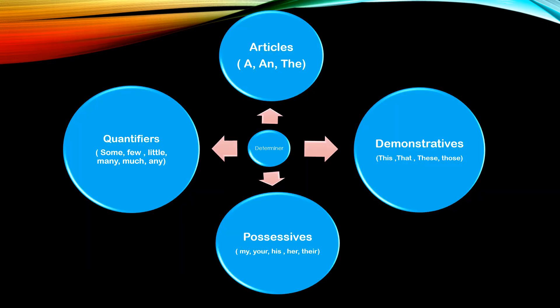These are the different types. Article is just a type of determiner. Demonstratives are also determiners. The possessive pronouns are also your determiners. The quantifiers are also your determiners. So we have articles: a, an, and the. Demonstrative: this, that, these, those. Possessives: my, your, his, her, their. Then you have the quantifiers: some, few, little, many, much, any.